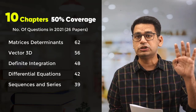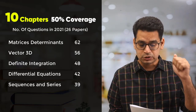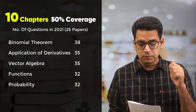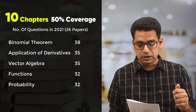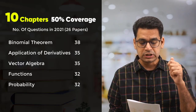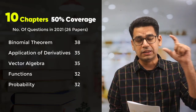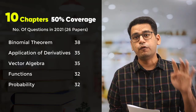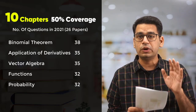So out of the top 5, 4 chapters are from Class 12. Then binomial theorem, AOD, vector, functions, probability — and in the next 5, again 4 are from Class 12.